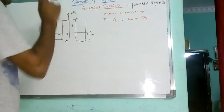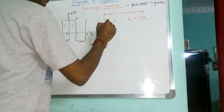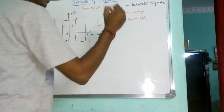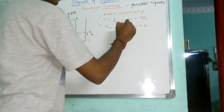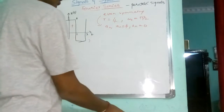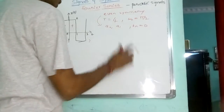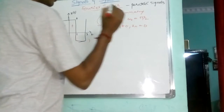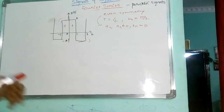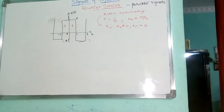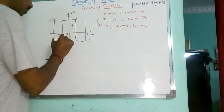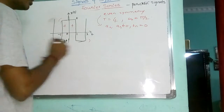Now, as it is an even symmetry, what all should be there? A naught and A n should be there. B n is 0. These both are non-zero, whereas B n is 0. Now, I will find out the values here. For that, first I need to define the signal.